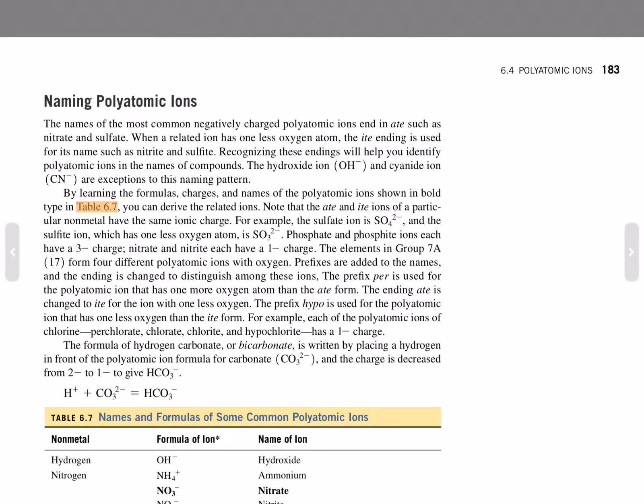By learning the formulas, charges, and names of polyatomic ions shown in bold type in Table 6.7, you can derive the related ions. Note that -ate and -ite ions of a particular non-metal would have the same ionic charge. For example, the sulfate ion, SO4^2-, and the sulfite ion, which has one less oxygen, SO3^2-.